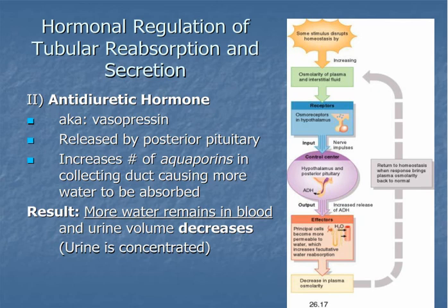ADH enhances facultative water reabsorption by causing special proteins called aquaporins to be inserted into the collecting duct membrane. These proteins allow water to move from the collecting duct into the interstitial spaces and back into the peritubular capillaries. Without aquaporins, the collecting duct membrane is impermeable to water. The more ADH present, the more aquaporins inserted and the faster fluid is reabsorbed. Elevated ADH levels result in more fluid reabsorbed and less lost in urine — maintaining blood volume by producing a small, concentrated urine.